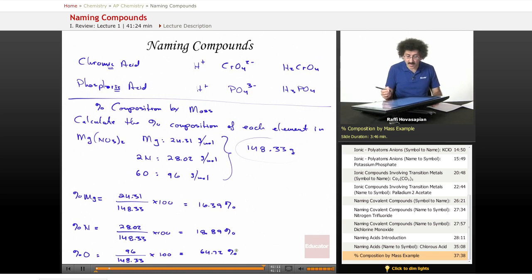So in magnesium nitrate, the majority of the mass is actually occupied by oxygen. Thank you for joining us here at educator.com for our first lesson of AP chemistry. We'll see you next time.